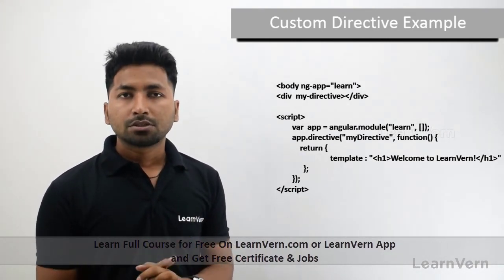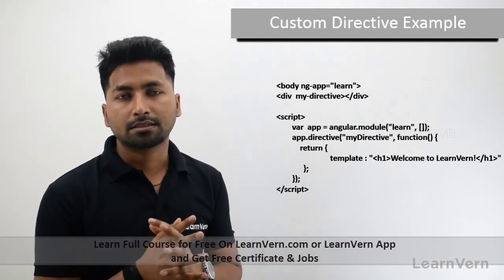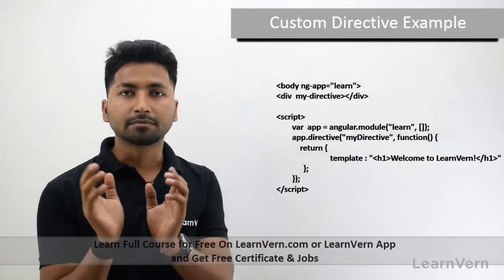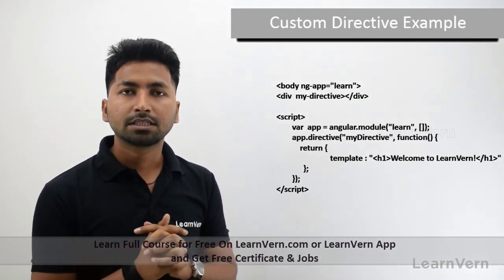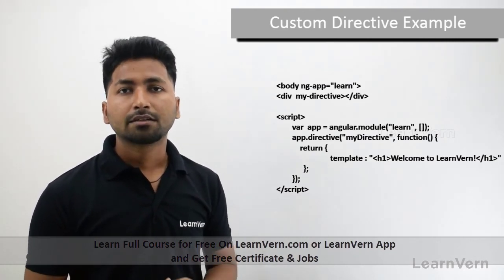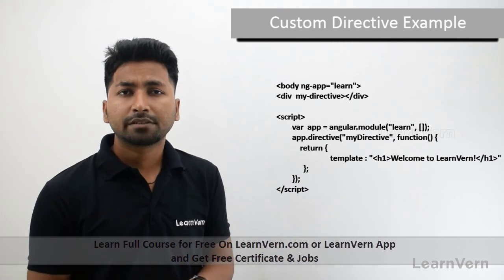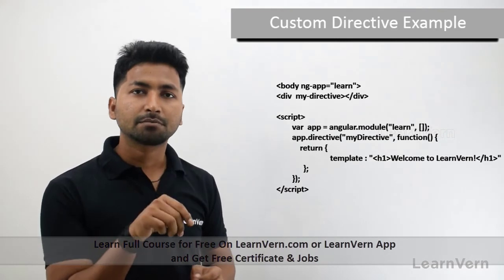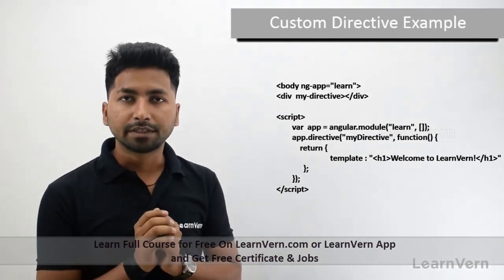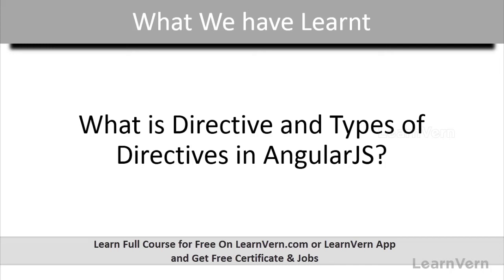Third, you can use a directive as a class: inside a div tag, write class equal to your custom directive name. Fourth, as a comment: write the HTML comment syntax — exclamation mark, dash dash — and in that comment write 'directive:' followed by your directive name. So in summary, we have seen what a directive is and the four types: element, attribute, class, and comment. In the next session we will see examples of AngularJS predefined and custom directives.